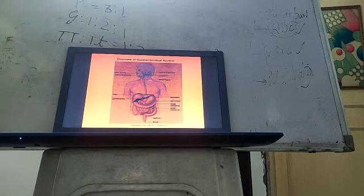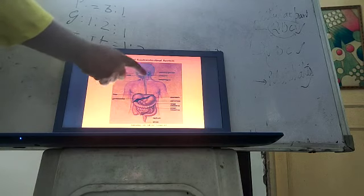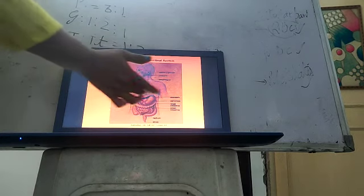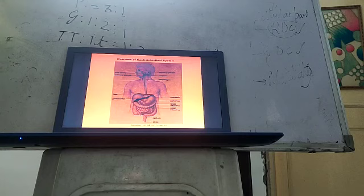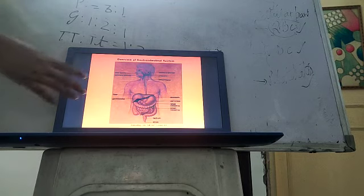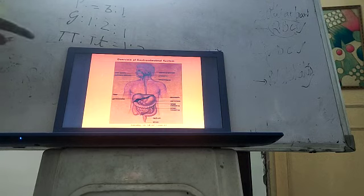Then food through the esophagus enters to stomach. In stomach there are gastric glands. These gastric glands are of three types.